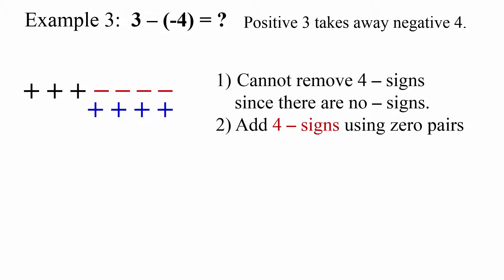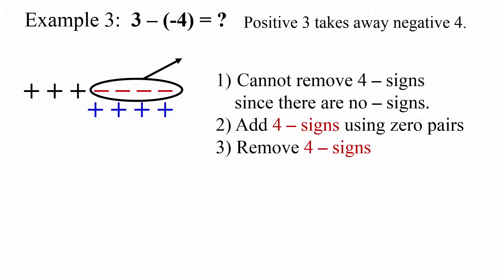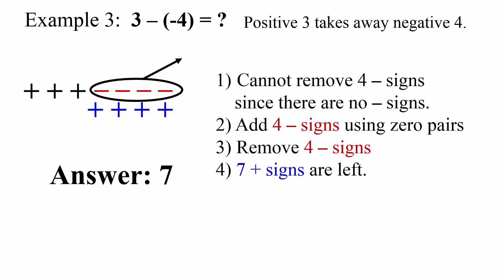I add 4 negative signs using zero pairs. Then I take away 4 negative. I am left with 7 positive. The answer is 7.